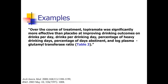Here's an example. This one reads: over the course of treatment, topiramate was significantly more effective than placebo at improving drinking outcomes on drinks per day, drinks per drinking day, percentage of heavy drinking days, percentage of days abstinent, and log plasma glutamyl transferase ratio. There are a whole bunch of outcomes measured in this study — you can imagine a big table with lots of numbers. But they give you the high level summary: on all these different drinking outcomes, the treatment beat the placebo. If you want more details, go to the table.